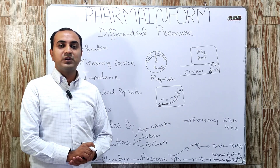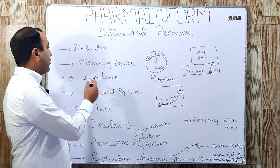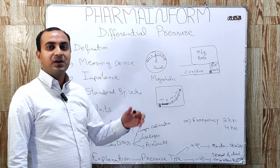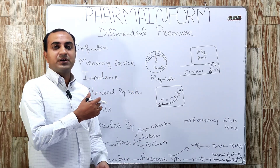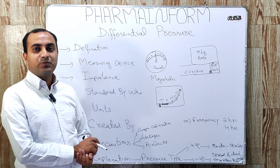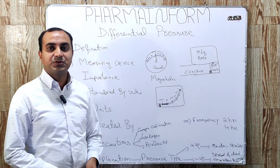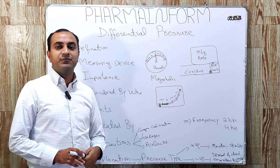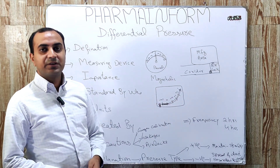In this video you will learn: what is differential pressure, what is the importance of differential pressure, how differential pressure is created, what is the unit of differential pressure, the recommended standards by WHO for differential pressure, what are the precautions which must be followed for differential pressure, and then we will discuss types of pressure — what is positive pressure, what is negative pressure, which type of pressure is maintained for tablet manufacturing area, and which type of pressure is maintained for sterile manufacturing area.